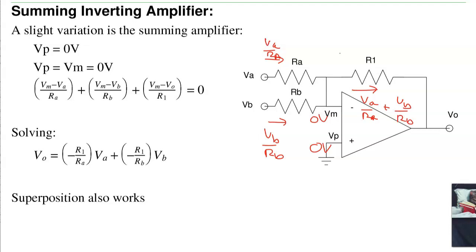The voltage is then I times R, and the polarity is this way, which makes this a minus. So the output is going to be minus R1 over RA times VA minus R1 over RB times VB. So this is the summing inverting amplifier.